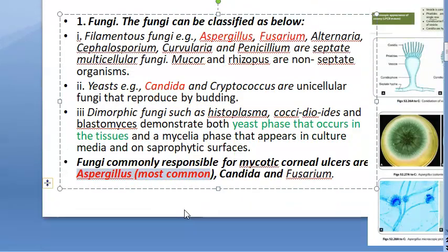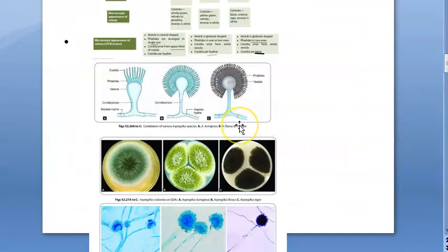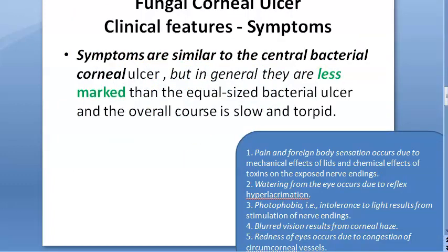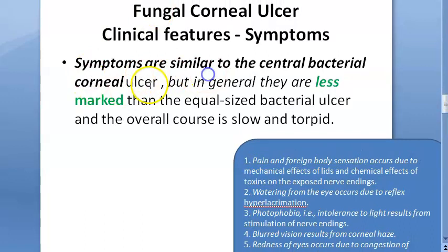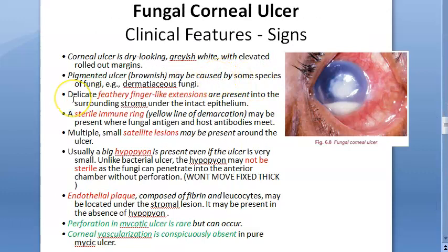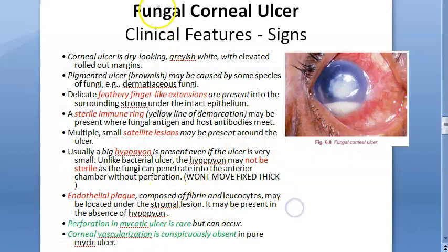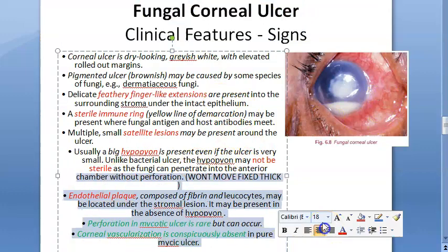Fungal keratitis risk factors: vegetative matter injury, animal tail injury, immunosuppression, prolonged steroid use. Symptoms are very mild. Important sign: the hypopyon does not move with head tilting (it is high-viscosity); fungus is actually present within the hypopyon in fungal corneal ulcer.